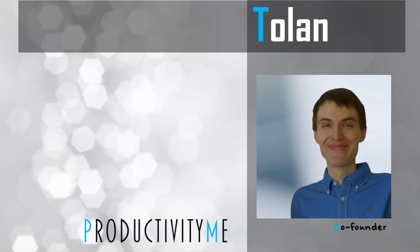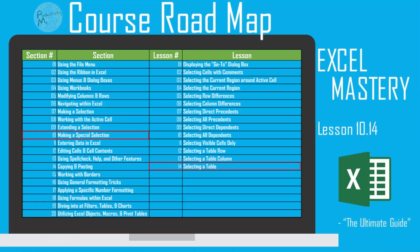Hi and welcome! My name is Tolan and I'm the co-founder of ProductivityMe. In this video we're going to look at using the Ctrl-A keyboard shortcut in order to select an entire table's contents, then in order to select an entire table, and lastly how we can use it to select an entire worksheet. So with that, let's get started.